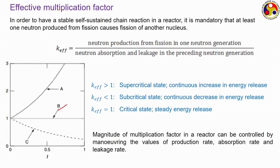The magnitude of the multiplication factor in the reactor can be controlled by manipulating the rates of production, absorption, and leakage. We can write that the rate of change of neutrons inside the reactor equals the rate of production minus the rate of absorption minus the rate of leakage. By balancing these three quantities, we can control the value of the effective multiplication factor inside the core.